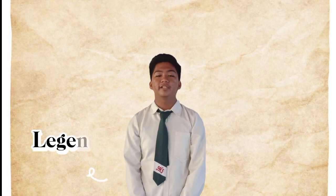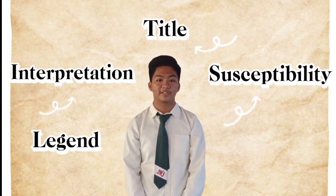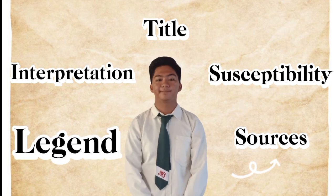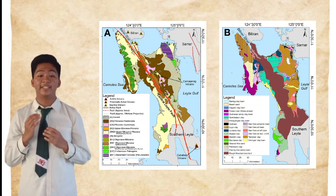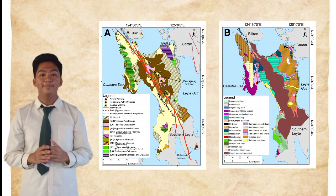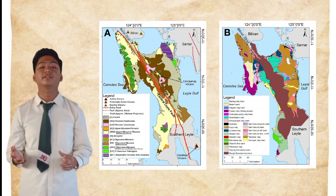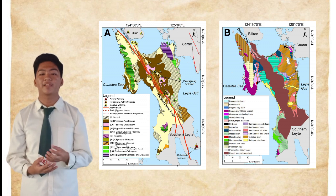There are five main parts of a geological map: legend, interpretation, title, susceptibility, and sources. Let us start with the legend. The legend of the map, also called the key, simply refers to the section of the map that provides explanations for symbols, colors, and patterns used in the map. This is done so that information in the map is presented as intended.